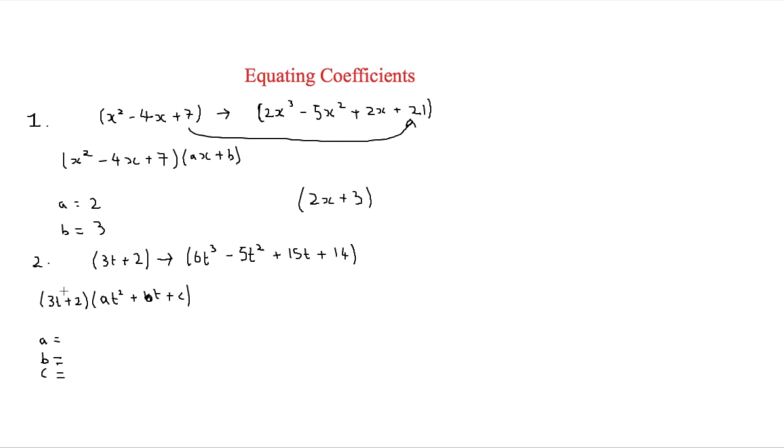So in order to get a, what we're going to be looking at is this 3t to this 6t cubed. So therefore a will be equal to 2 because 3 times 2 is equal to 6. Then the b we can't work out yet because we don't know what's going on with b yet. But the c we can work out because we've got 2 needs to go to that 14. So therefore c is going to be equal to 7.